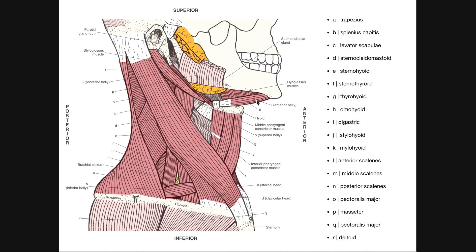Muscle I is the digastric muscle — digastric meaning two bellies. This one is very similar to omohyoid. Here's the anterior belly of digastric, and the posterior belly is right here. They have an intermediate tendon that fuses the two bellies. You can actually see the fascial sling coming off of the hyoid bone, looping around that intermediate tendon of the digastric, which forces the digastric into this bent conformation.